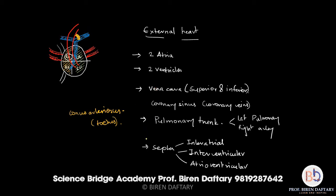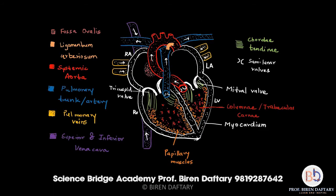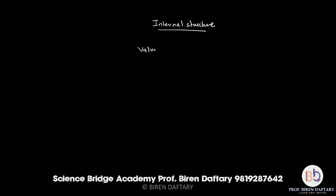Now let us start with the internal structure of the heart. Here is the diagram of the internal structure: this area is the right atrium, this is the right ventricle, and this is the left ventricle — four chambers. The purple blood vessels shown are the superior vena cava and inferior vena cava. The internal structure of the heart shows different types of valves — valves are structures which prevent the backflow of blood.